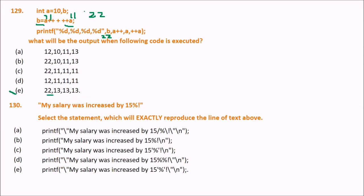While A++ was executing, the value was still 11. After that line it increments to 12 due to post-increment. Then ++A makes it 13. Since A++ is post-increment again, it stays 13 during that expression. So the final output is 22, 13, 13, 13.